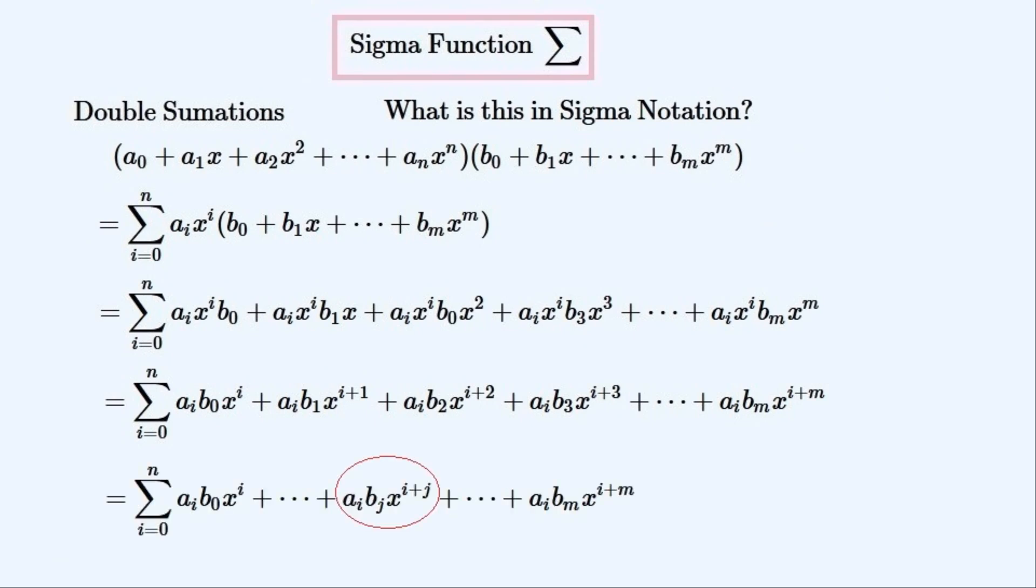Then we can look for the jth term in this polynomial. This is a big step. So we can use this jth term to get it into the second sigma sum. So now we have the product of two polynomials in sigma notation.